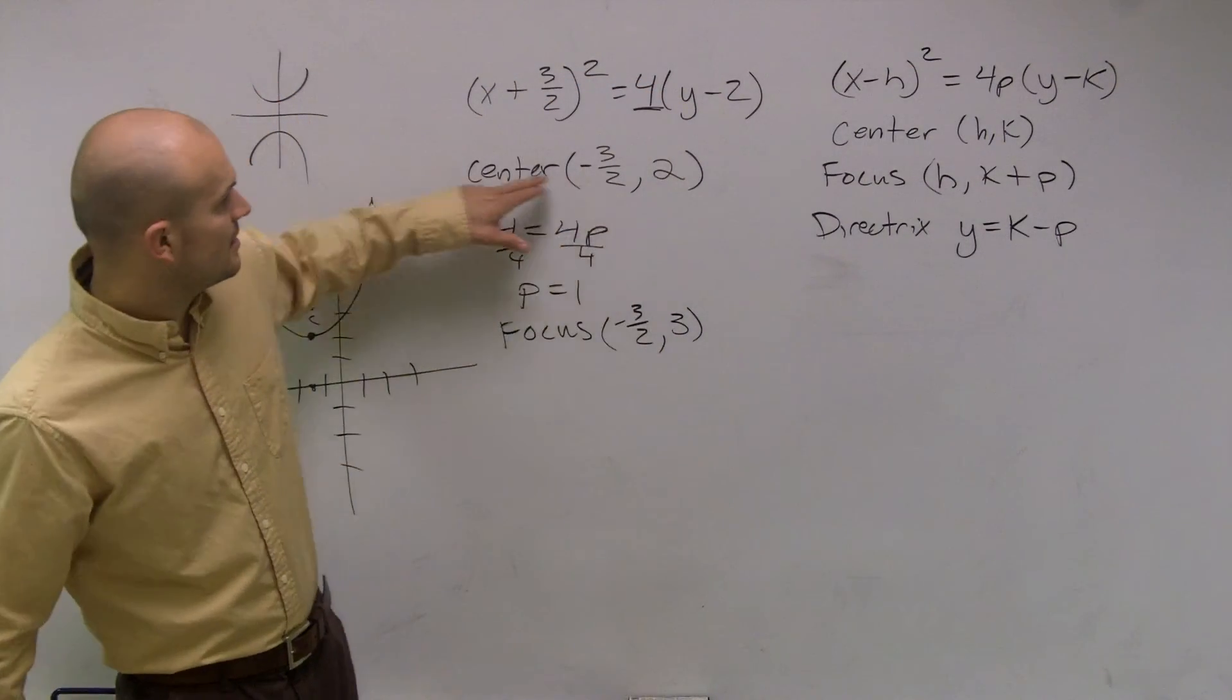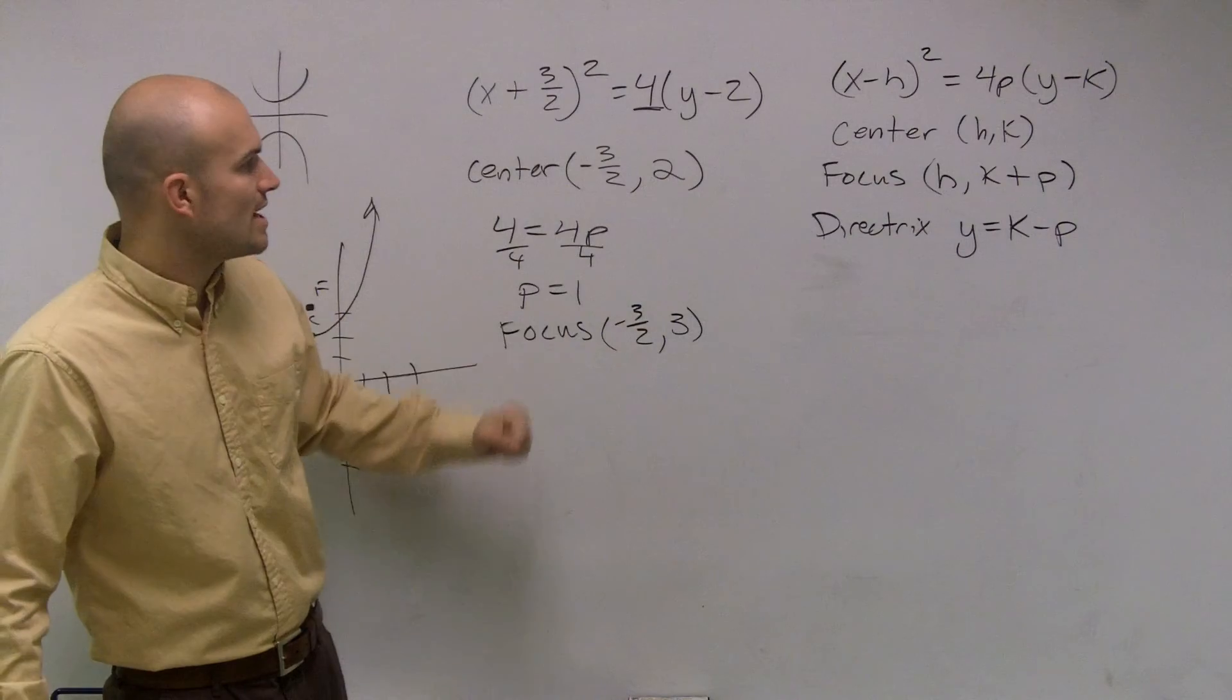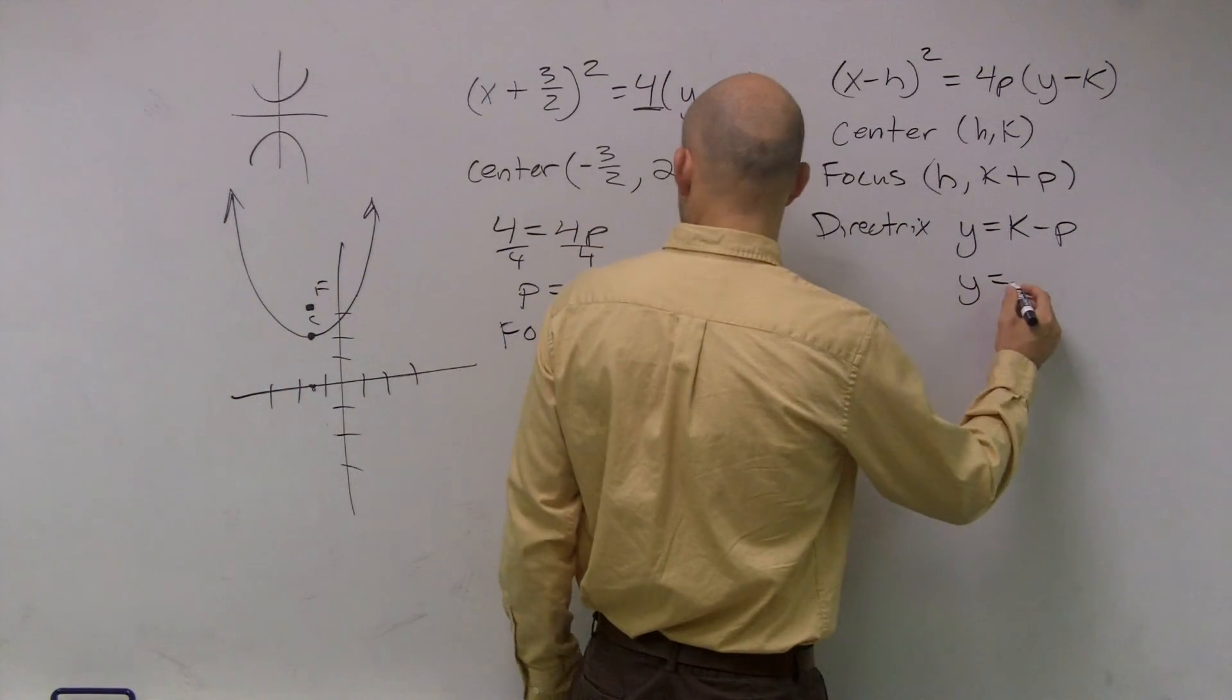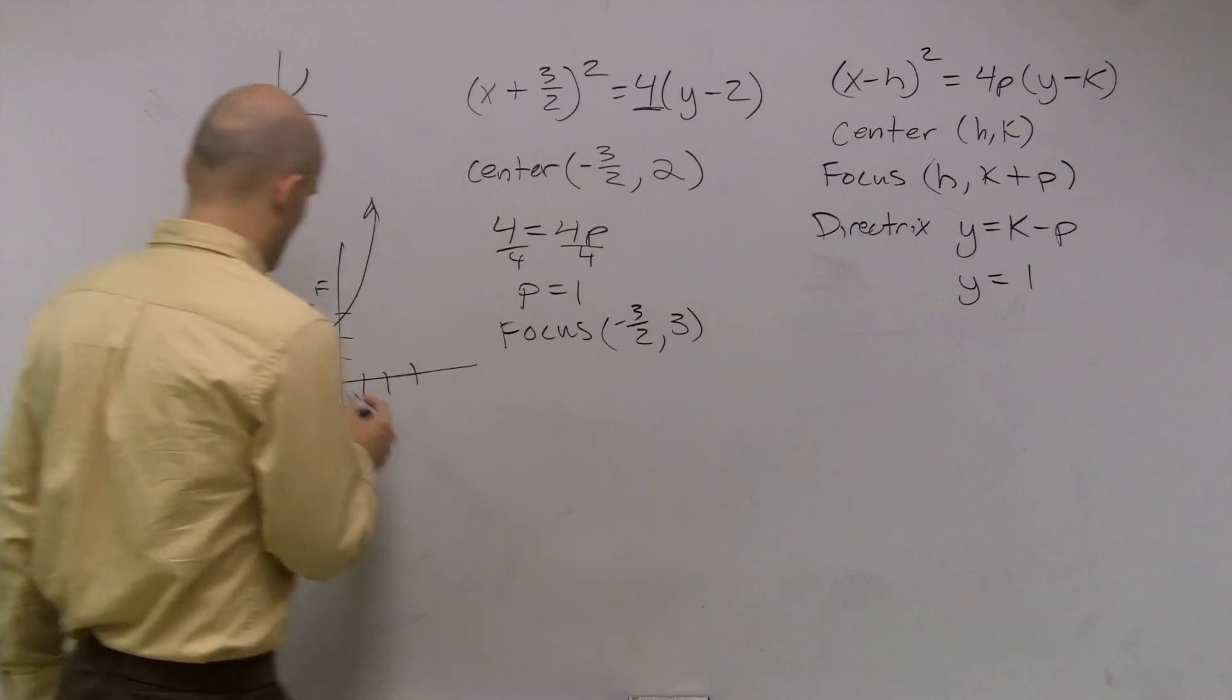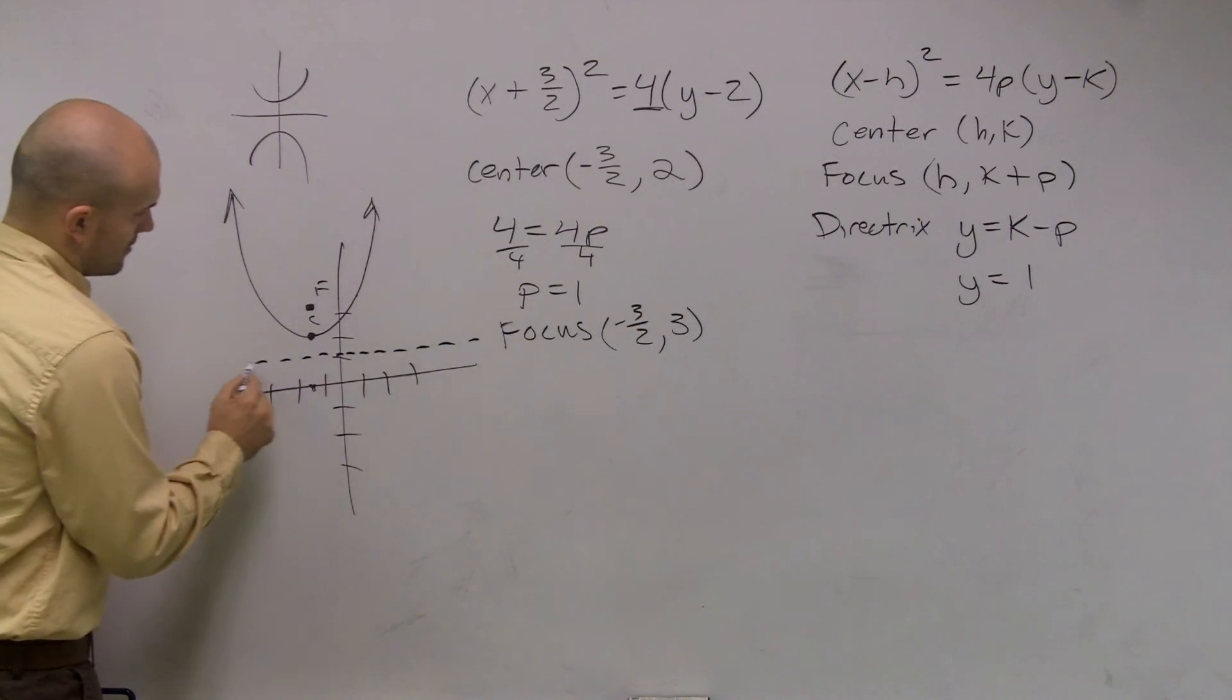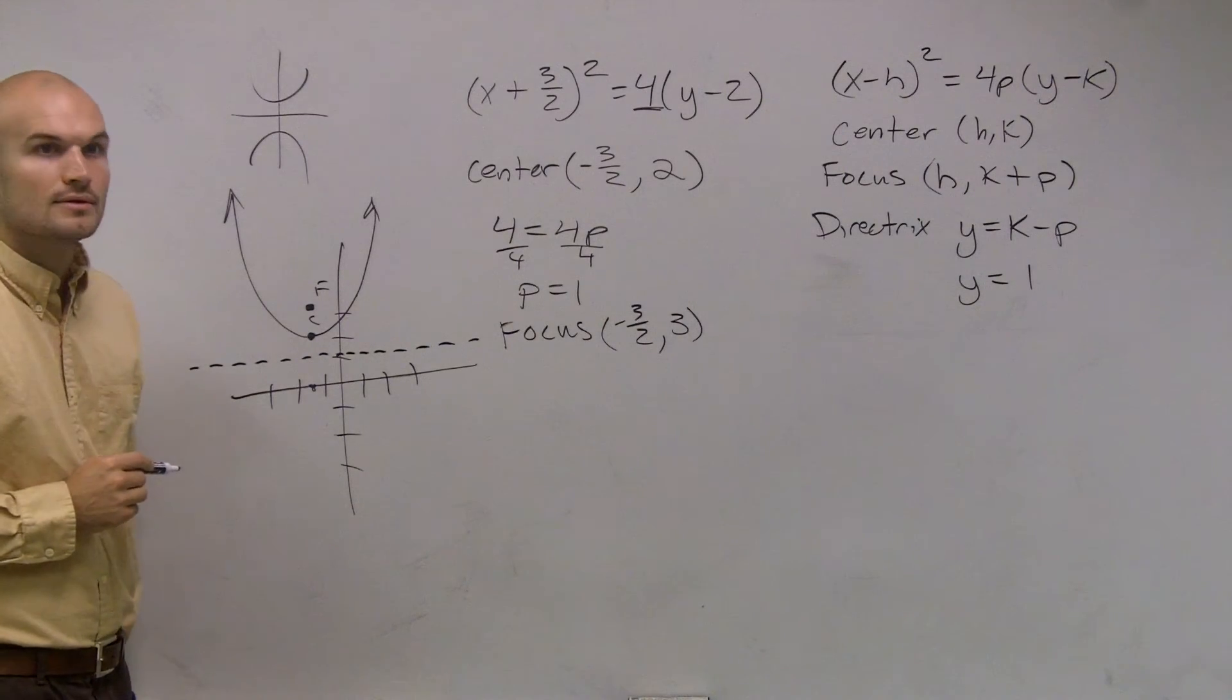So I just take my k value, which is 2, and I subtract my p, which is 1. So my directrix is y equals 1. Therefore, I have a little line right here, and that's my directrix.